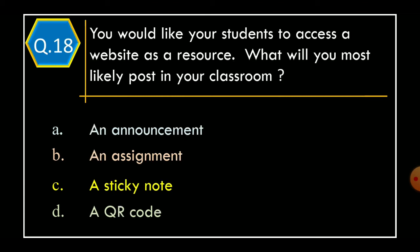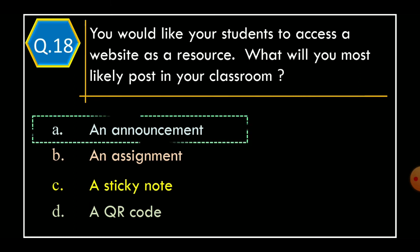Question 18: You would like your students to access a website as a resource. What will you most likely post in your Google Classroom? Option A: An Announcement, Option B: An Assignment, Option C: A Sticky Note, Option D: A QR Code. And correct option is Option A: An Announcement.